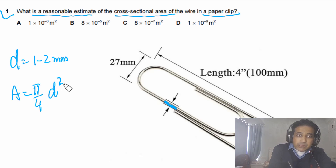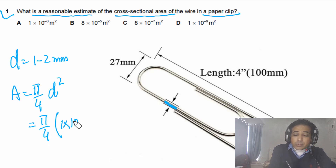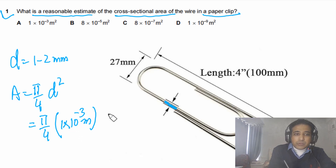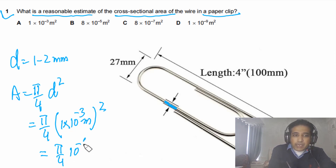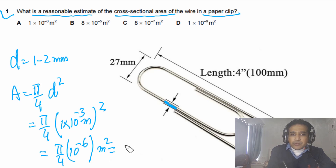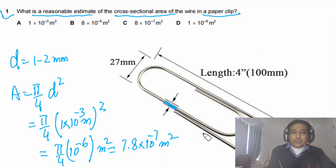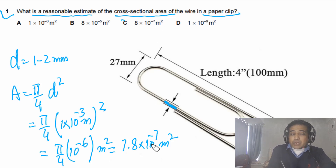To calculate the cross-sectional area, we use A = (π/4)d². Plugging in d = 1 mm = 1 × 10⁻³ m, we get A = (π/4) × (10⁻³)² = (π/4) × 10⁻⁶ m². Solving this gives approximately 7.8 × 10⁻⁷ m². So the order of magnitude is 10⁻⁷.